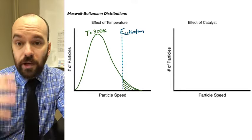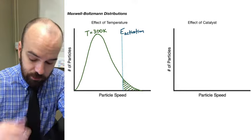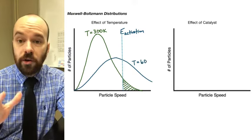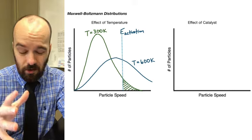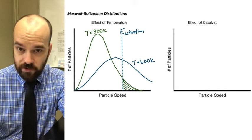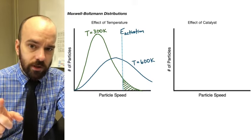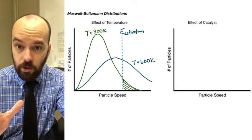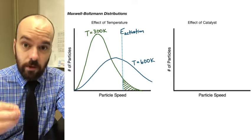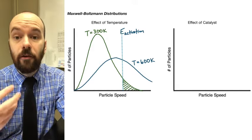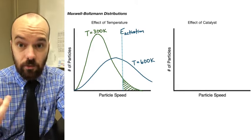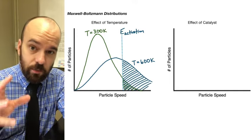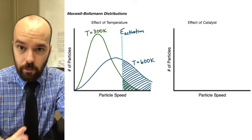Now what happens if we increase the temperature? I'm going to redraw the Maxwell-Boltzmann distribution at a higher temperature — let's say 600 Kelvin. Notice how that shifts the particles to the right, over a larger range of speeds. But there are also more particles now that are to the right of that activation energy barrier — in other words, more particles that have enough energy to overcome the activation energy barrier and therefore more particles that can react when they collide. That's a much bigger shaded area, which represents a greater number of particles.